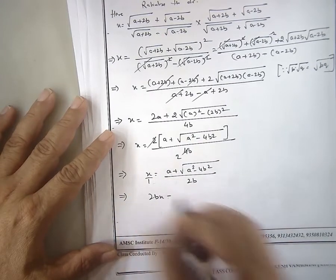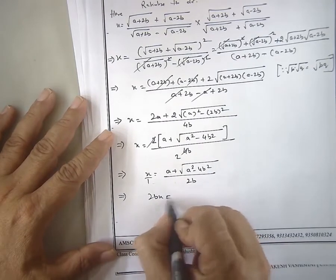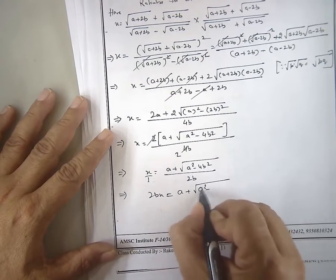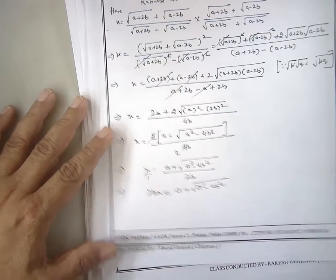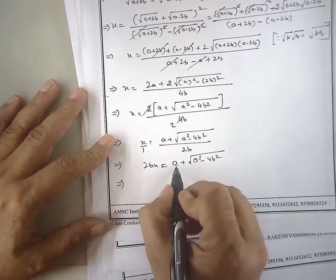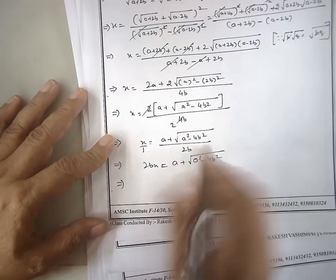Then again, take care of the square root on right side. Move the square root to left side.